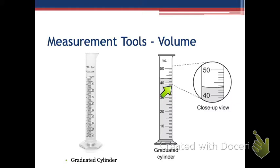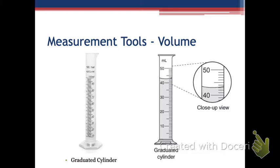It's also measured to the whole number, so again I would get one decimal place. Now, you see how the liquid has a curve — where do we measure it from, the top of the curve or the bottom? We measure from the bottom. This curved line has a name: it's called the meniscus. You might want to write that down.